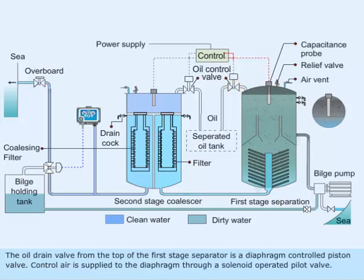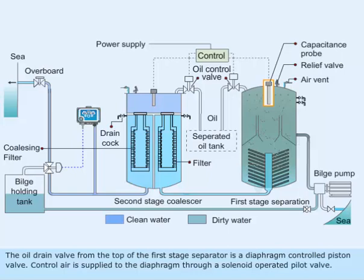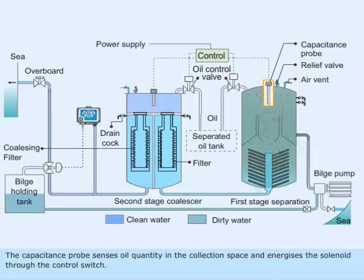The oil drain valve from the top of the first stage separator is a diaphragm controlled piston valve. Control air is supplied to the diaphragm through a solenoid operated pilot valve. The capacitance probe senses oil quantity in the collection space and energizes the solenoid through the control switch.